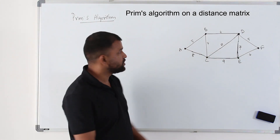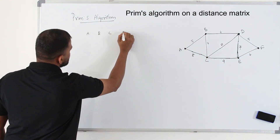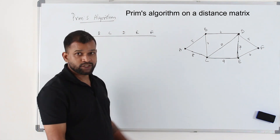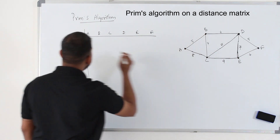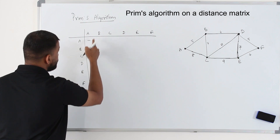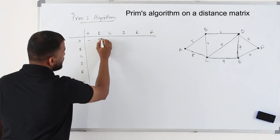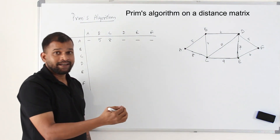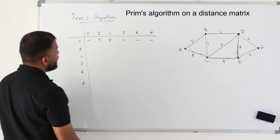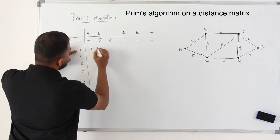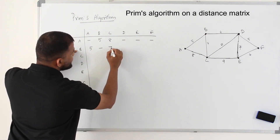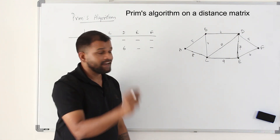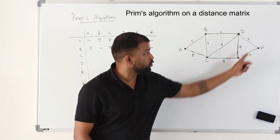I'm going to take the distance matrix of this graph. We have already learned how to form a distance matrix. The distance from A to A — just put a hyphen, don't put 0 there. A to B is 5. A to C is 8. There are no other edges directly connecting to A. From B: B to A is 5, B to B — no loop. B to C is 7. B to D is 6. No other direct single edge connecting from B to any other vertices.